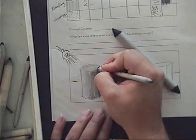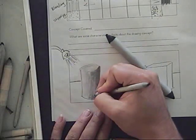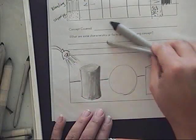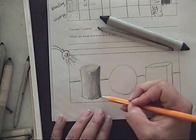There's different sizes of blending stumps. So if you have a real tight area, a small space, you can use a different blending stump.